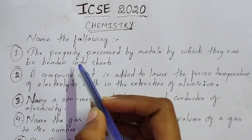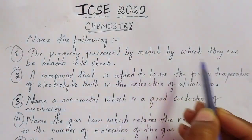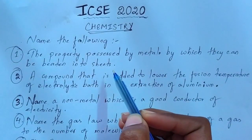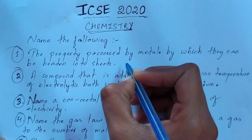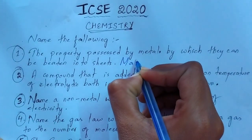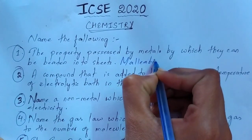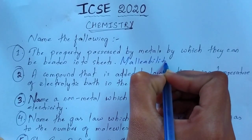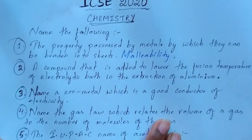The first question is: name the property possessed by metals by which they can be beaten into sheets. This property is known as malleability, and this is from your metallurgy chapter. Malleability is the property possessed by metals by which they can be beaten into sheets.